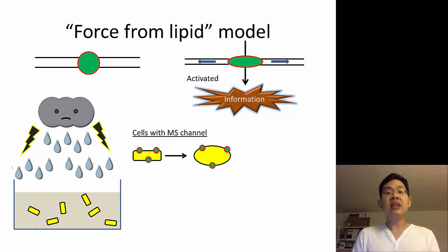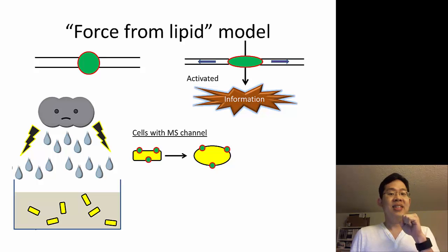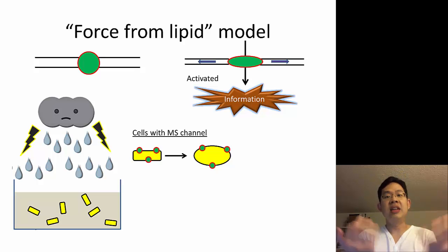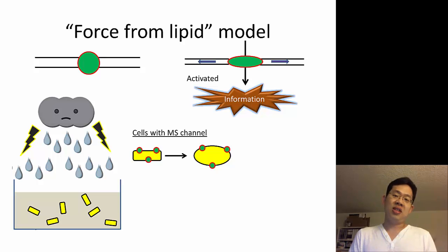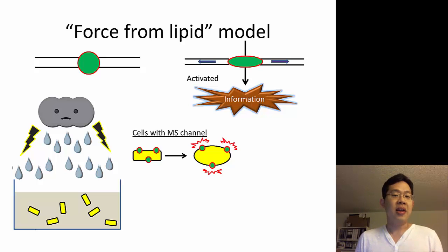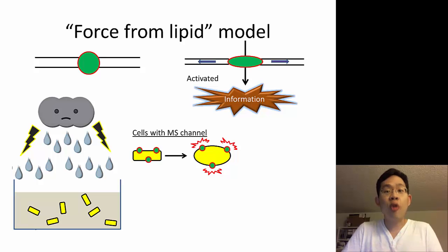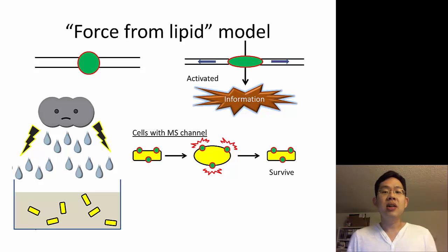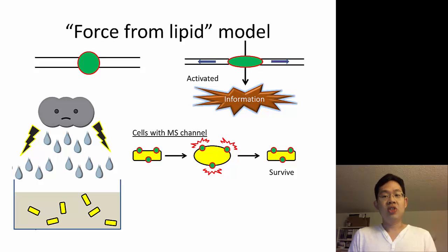As the water flows into the bacterial cell, the cell will continue to swell, and the swelling of the cell will increase the membrane tension. Just imagine if you blow a balloon — as the balloon gets bigger, the tension in the rubber of the balloon increases. The same applies to the cell membrane: as water flows in, the tension within the membrane increases. The increase in tension will activate the mechanosensitive channel, causing it to open. The opening of the channel will release some of the cell's contents, which will make the bacterial cell shrink back to its original size, and therefore the cell can survive.